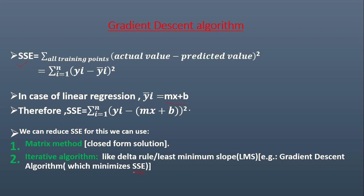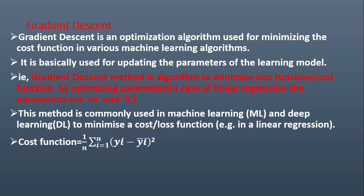Gradient descent algorithm is basically used to minimize this SSE. Gradient descent algorithm is an optimization algorithm used for minimizing the cost function. So, SSE is being reduced by reducing the cost function in various machine learning algorithms. And it is basically used for updating the parameters of the learning model.